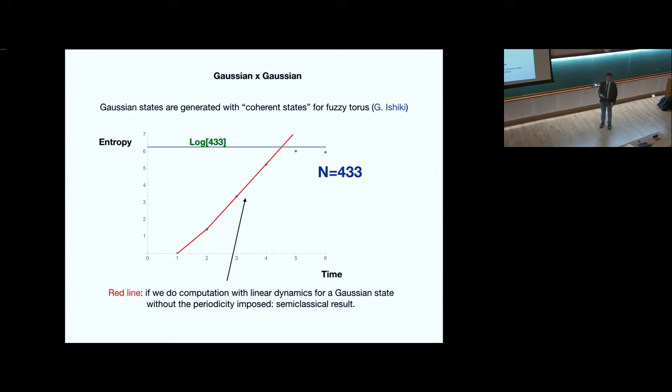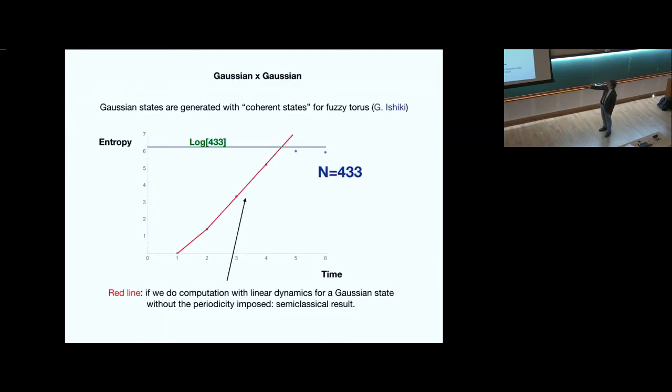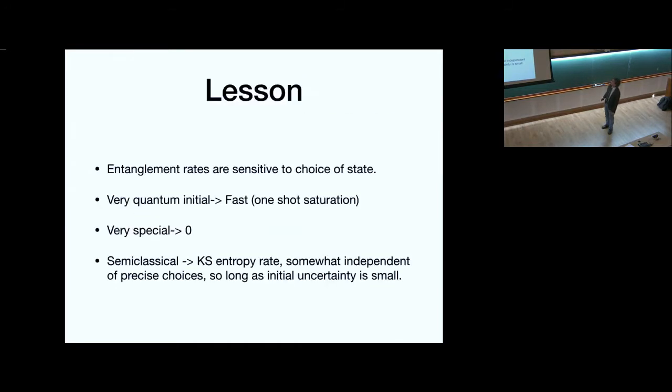So I told you a quantum example, basis times random, and you get full entanglement in one shot. Whereas here, the entanglement kind of builds up slowly. So we showed some of these relations to Lyapunov exponents in 2015. And then the slope in this case is really close to the final value in the first few steps, and that's because the Lyapunov exponent is actually large. So semi-classical is pretty much a good estimate all the way up to where this thing hits the maximum entropy that you need. So the last one is entanglement state rates are sensitive to a choice of state. If very quantum initial, it can be fast or zero, or very special is zero. And semi-classical, you can get something that's kind of Lyapunov-like. So Lyapunov exponents control that type of physics.